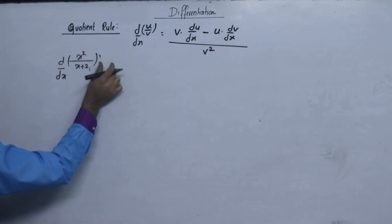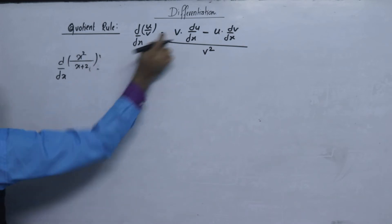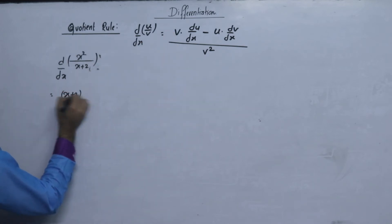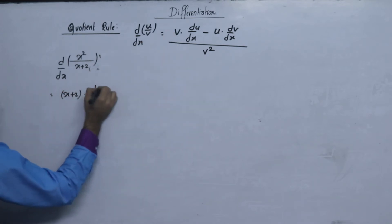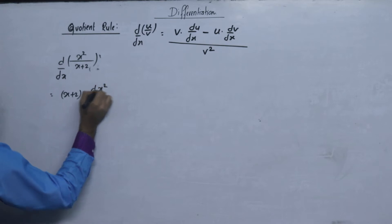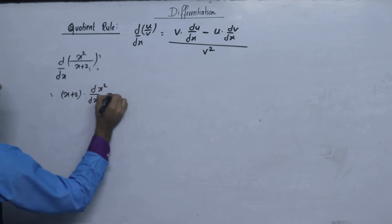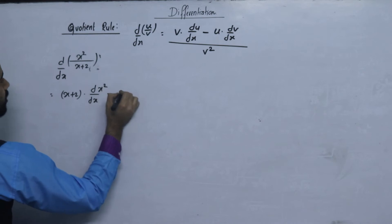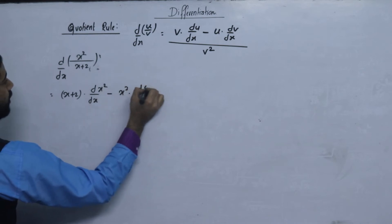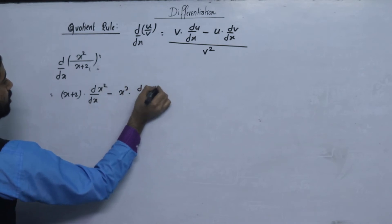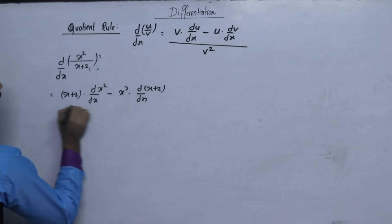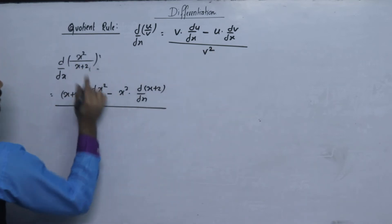Let's solve the problem. v is x plus 2. u is x squared. The quotient rule gives us: v times the difference of x squared with respect to dx, minus u times the difference of x plus 2 with respect to dx, all upon v squared.